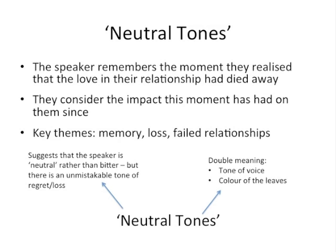The word 'Neutral' introduces the idea that the speaker wants to portray himself as neutral rather than bitter, but there is an unmistakable tone of regret and loss in the poem — hinting that love is something it's quite difficult to feel neutral about. The word 'Tones' has a double meaning: it can refer to tone of voice, which in this poem is very negative and pessimistic, but it also refers to colour, a key motif, as the leaves of the winter tree are described as grey throughout the poem. That lack of colour reflects the lack of emotion.